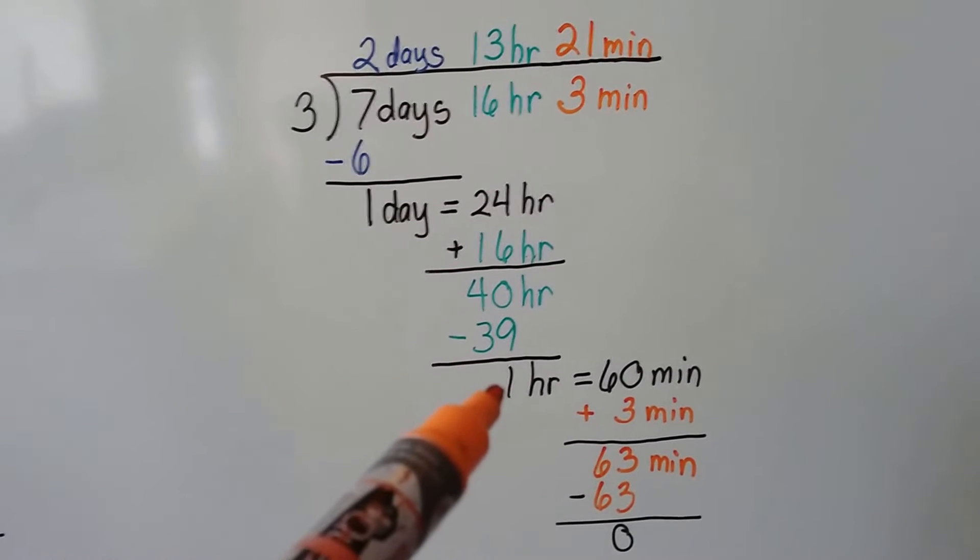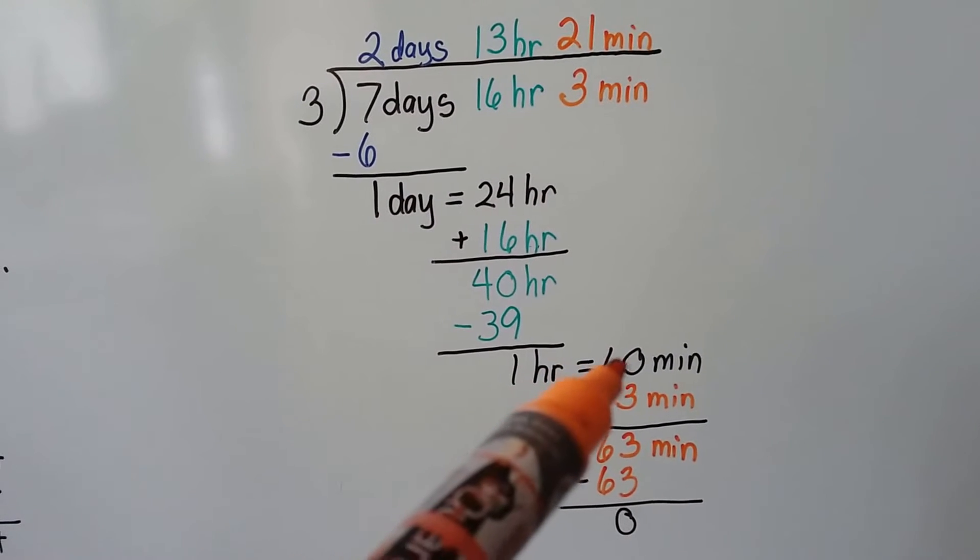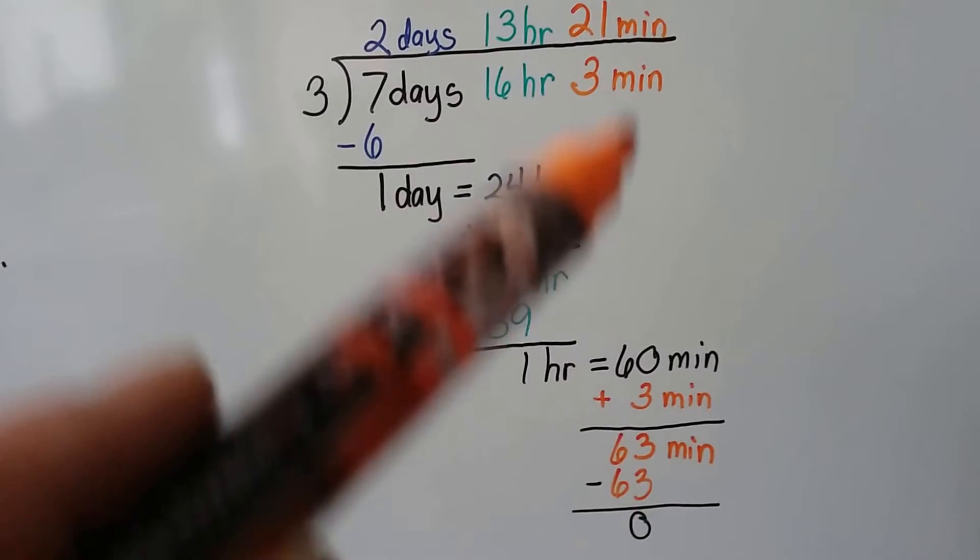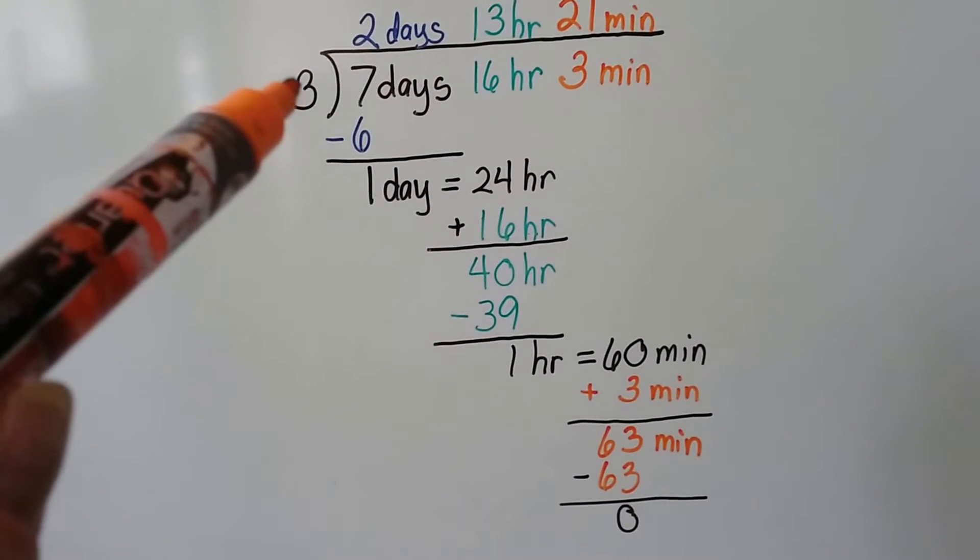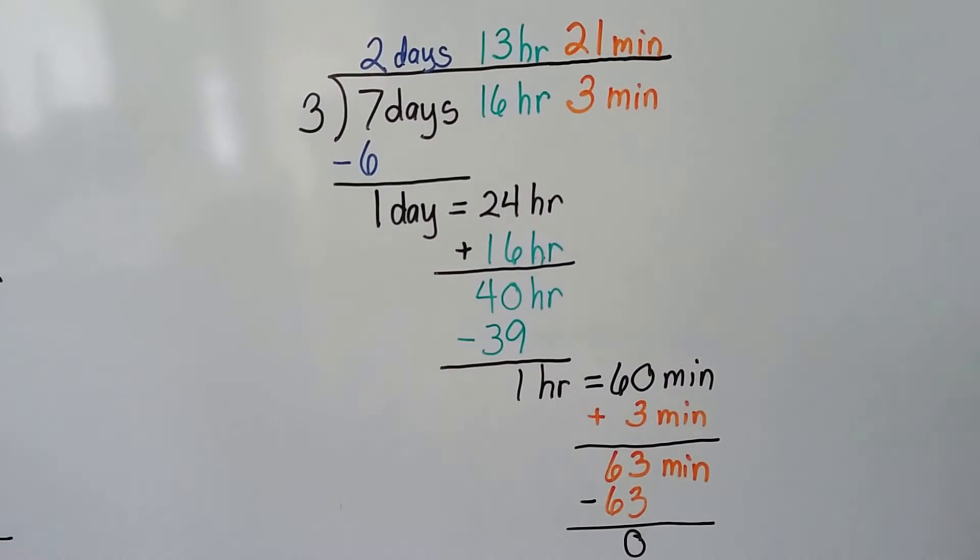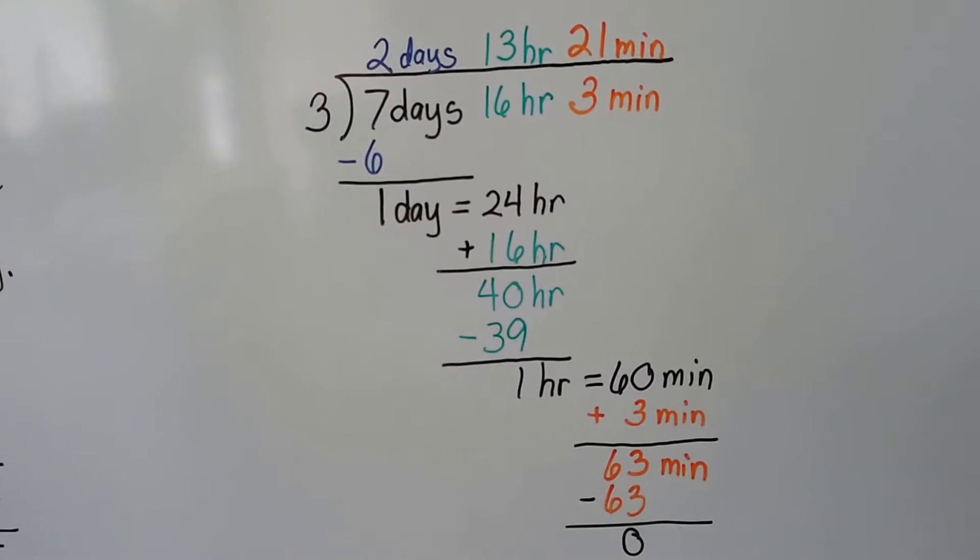40 minus 39 is 1 hour left over. We need to convert that to minutes to drop the minutes down. So that's 60 minutes in 1 hour. Now we add the 3 minutes to it and we have 63 minutes. How many times can 3 go into 63? 21 times. That's 21 minutes and we have a 0 remainder.